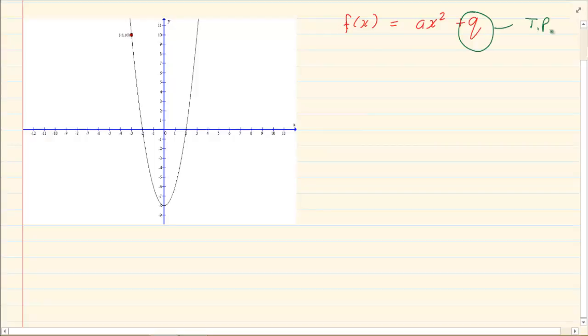So when we are drawing graphs the first step is you are going to substitute your turning point in. Number 2, you are going to substitute x and y and your aim is to solve for A.